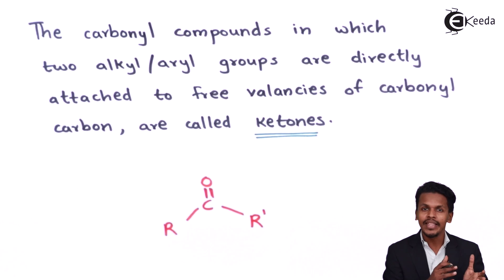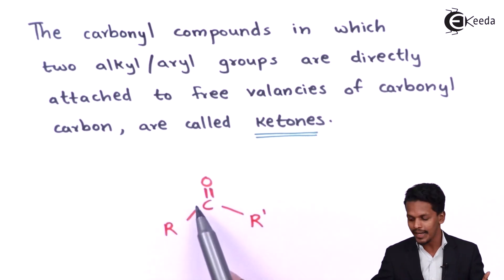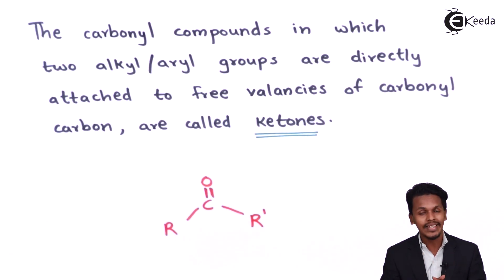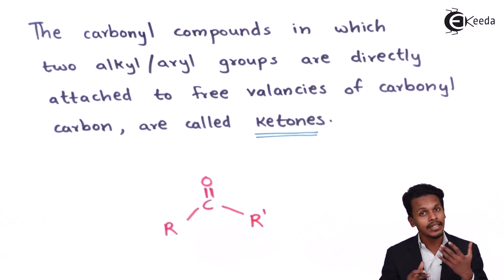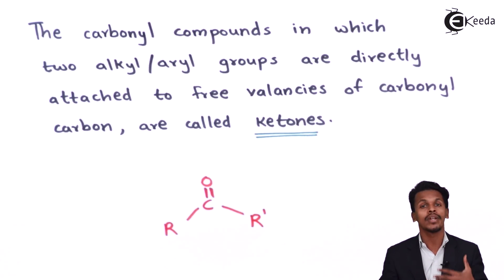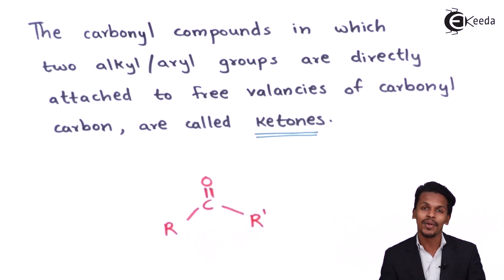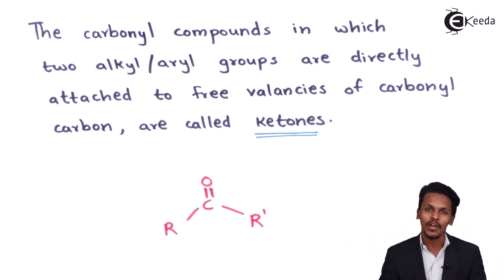If we compare aldehydes and ketones: in an aldehyde, one of the free valencies of the carbonyl carbon is occupied by a hydrogen atom. But in a ketone, both free valencies of the carbonyl carbon are occupied by alkyl or aryl groups — either both alkyl, both aryl, or one alkyl and one aryl. The functional group of a ketone is the carbonyl group, C double bond O.